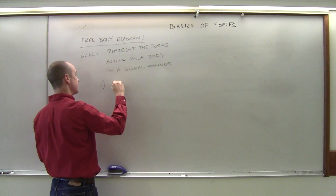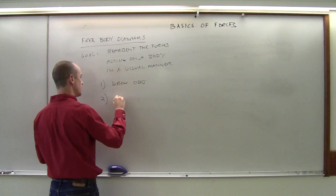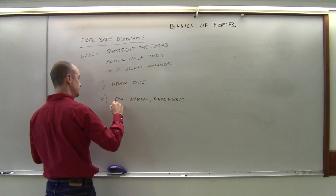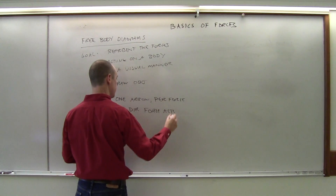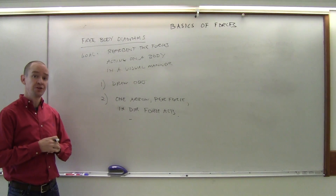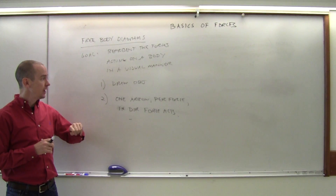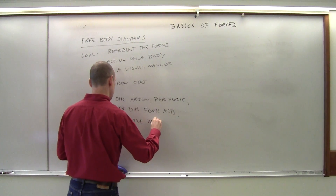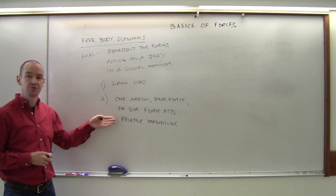Let's think about the steps. First, draw the object. Next, draw an arrow — each arrow represents an individual force. So if you have two tensions, you draw two arrows, one for each. Draw each arrow in the direction the force acts. You also want to show relative magnitude: it doesn't have to be exact, but big forces should be drawn with big arrows and smaller forces with smaller arrows.